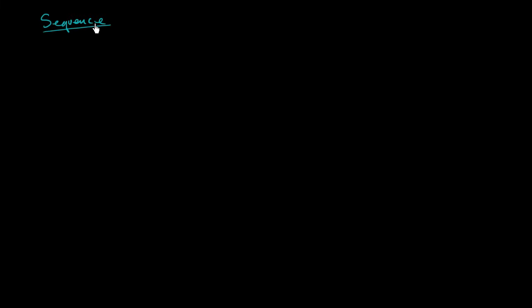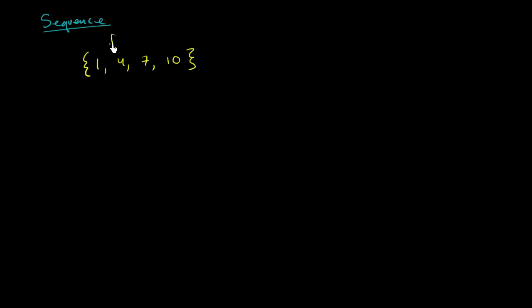What I want to do in this video is familiarize ourselves with the notion of a sequence. All a sequence is is an ordered list of numbers. For example, I could have a finite sequence — that means I don't have an infinite number of numbers in it. Let's say I start at 1 and I keep adding 3: 1 plus 3 is 4, 4 plus 3 is 7, 7 plus 3 is 10. And let's say I only have these four terms, so this we would call a finite sequence.